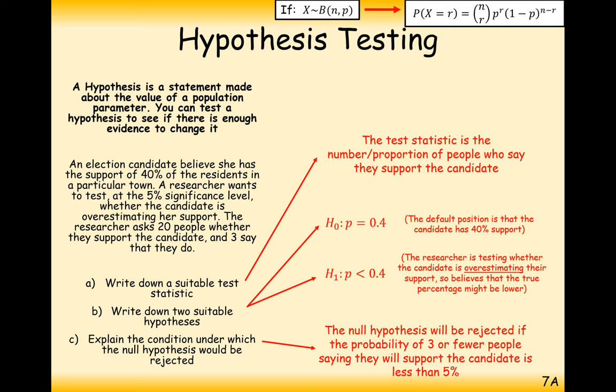So if we only sample 20 people, then there is going to be some variation in the number of people who say yes, they support this candidate, but is 3 too low? So what we're going to see is whether 3 or fewer people support the candidate and whether that has a less than 5% chance of happening. If it has a less than 5% chance of happening, then it's very unlikely to happen. So therefore, the probability is probably going to be less than 0.4.